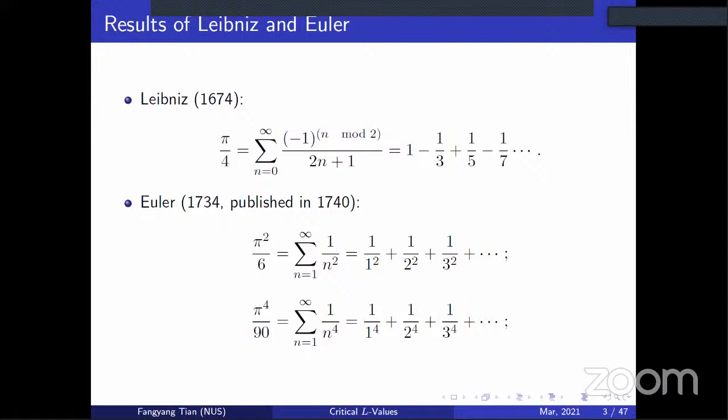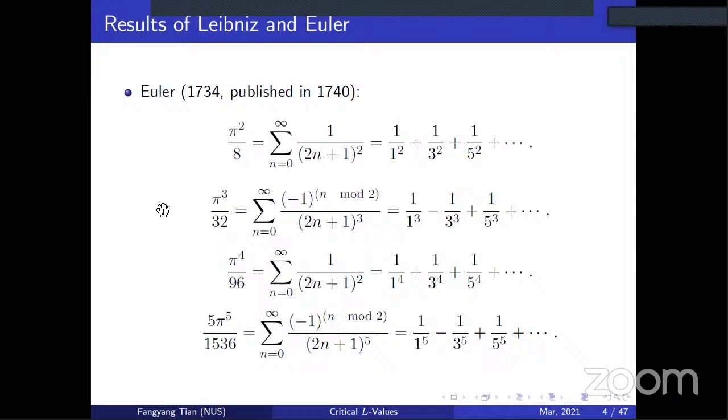Let's look at some classical examples. In the 17th and 18th century, Leibniz and Euler had already known some equalities like this: on the left hand side we have a rational multiple of a power of pi, and on the right hand side we have a finite series. This was published in the 17th century, and then later in the 18th century we have more results of Euler. All of these are of the same nature.